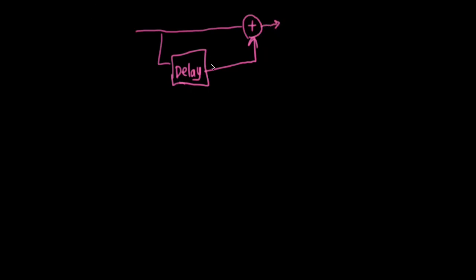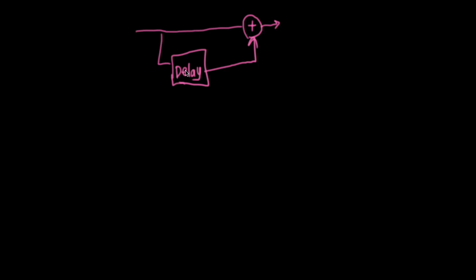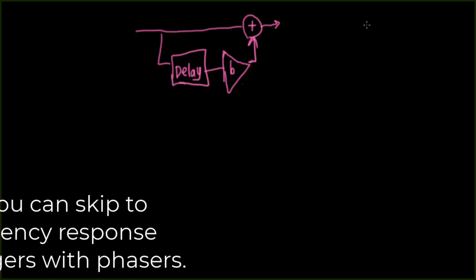If you use a relatively long delay time, you'll hear this as a distinct echo. So, flangers use very small delay times that you don't hear as a separate echo, and the result is this weird filtering effect. And, actually, you might want to change the intensity of the effect. So, let's put in a multiplication by a multiplier, let's call it B here. That will let you change how much of this delayed signal gets added in.